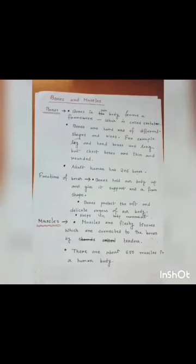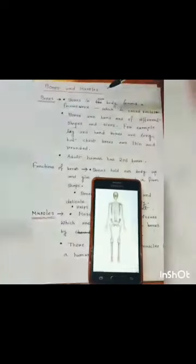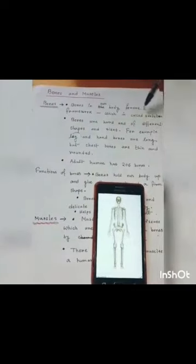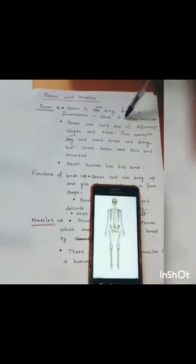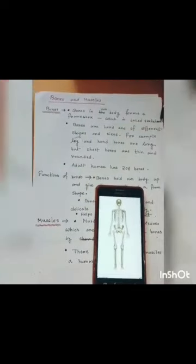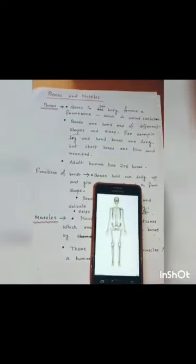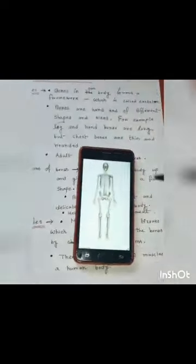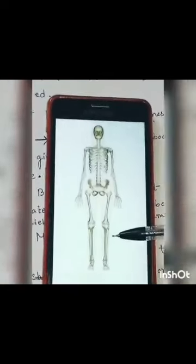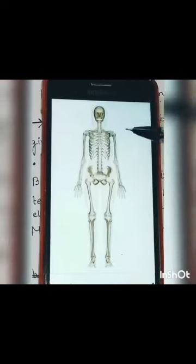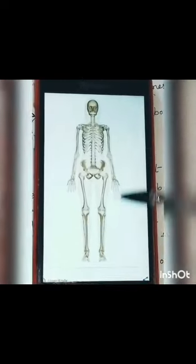Now know about bones. Bones in our body forms a framework which is called skeleton. Every single person has a skeleton made up of bones. Look at the picture. It is a picture of a human skeleton. It is a framework of bone. You can see it is made up of bone fully.